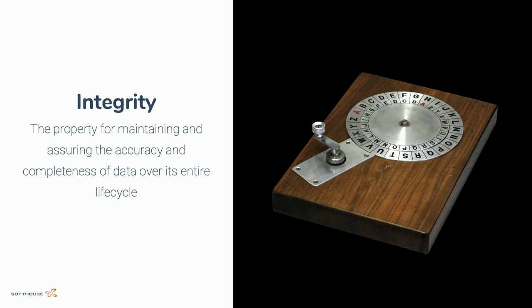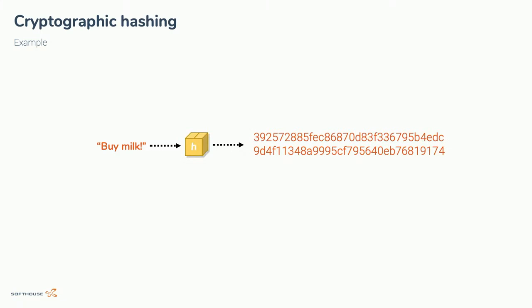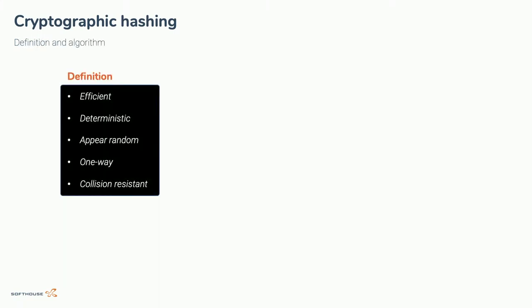We're going to start with integrity — detecting that data has been modified. I'll introduce something you probably already know: hashing. You take a message, in this case 'buy milk,' run it through an algorithm, and get a result. This is called a hashing algorithm. There are many different ones but we're going to look at the cryptographic ones. The definition of a cryptographic hash is that it needs to be efficient — quick and cheap to use.